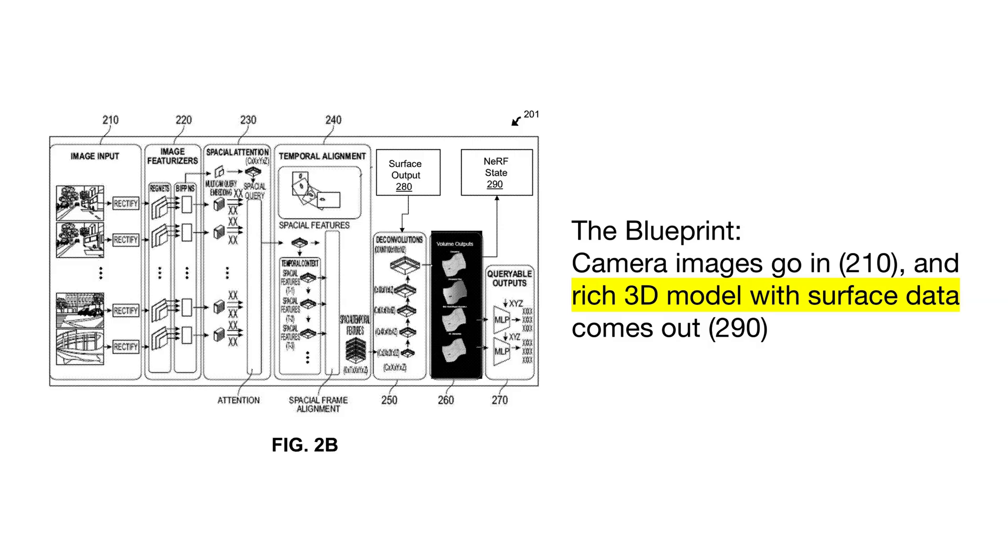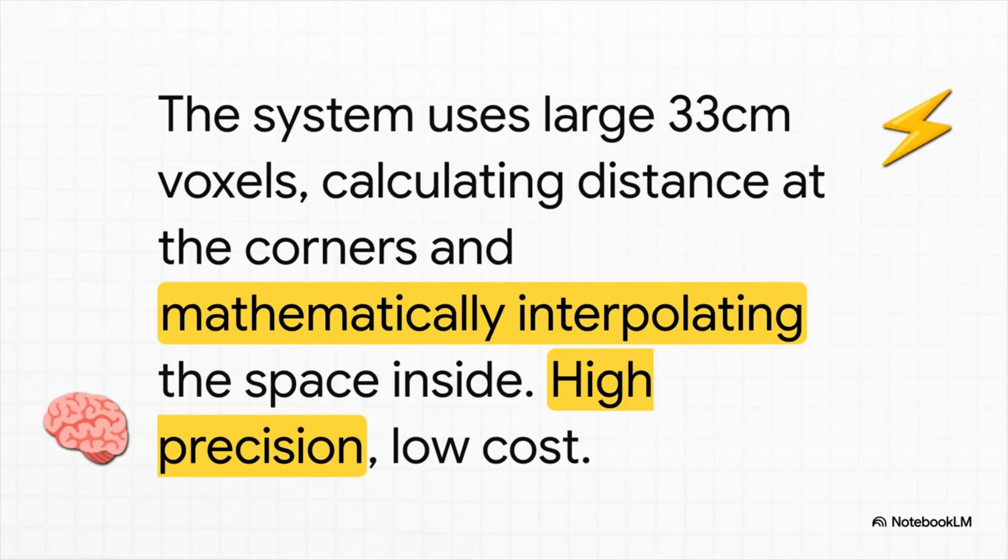Okay, let's talk about that second innovation: efficiency. Because making a map this detailed could totally melt a normal computer. So instead of trying to calculate everything everywhere, the system is smart. It works with these bigger 33-centimeter cubes. And here's the brilliant part: it only does the hard math to find the exact distance at the eight corners of each cube. Then it uses a clever bit of math—it's called interpolation—to basically connect the dots and figure out the distance for any point inside the cube. It's an incredible shortcut that gives you high-res results without the high-res cost.